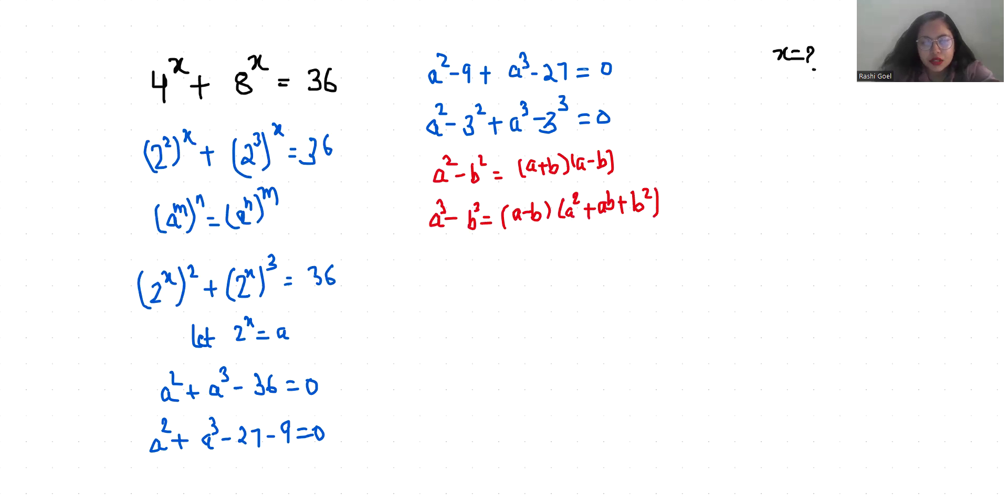So it becomes a plus 3 times a minus 3, plus a minus 3 times a square plus ab is 3a plus 9. So a minus 3 times a square plus 4a plus 12 equals 0.